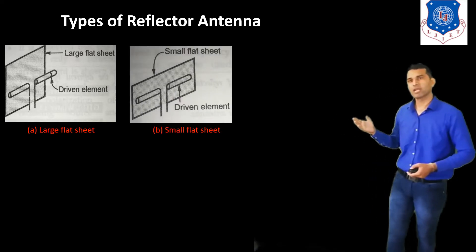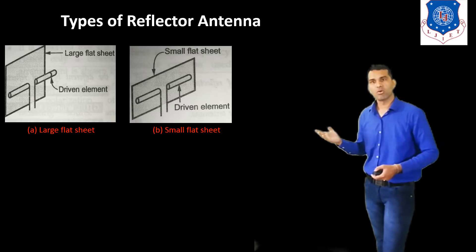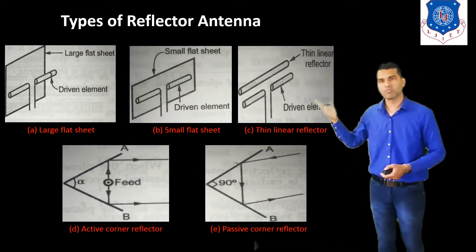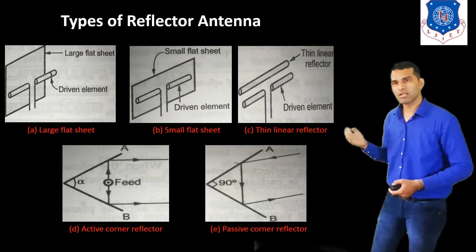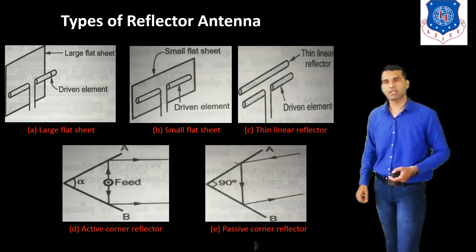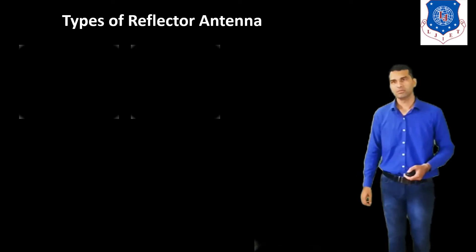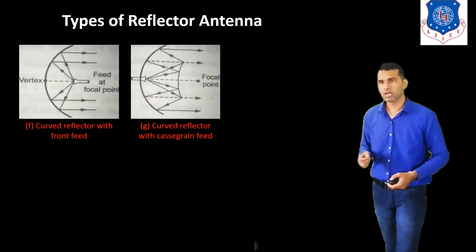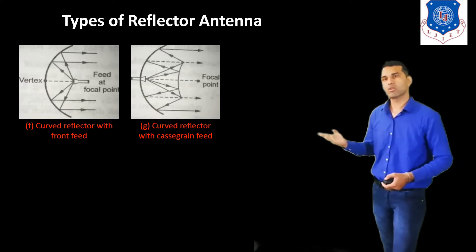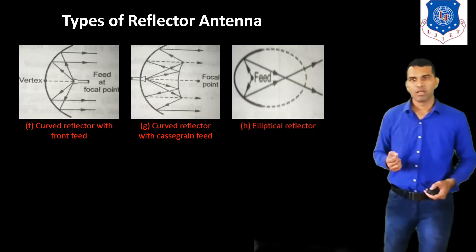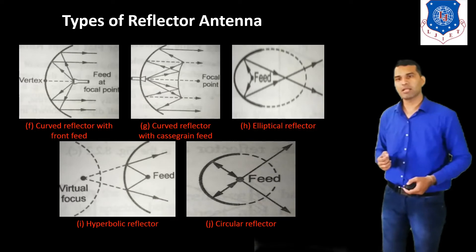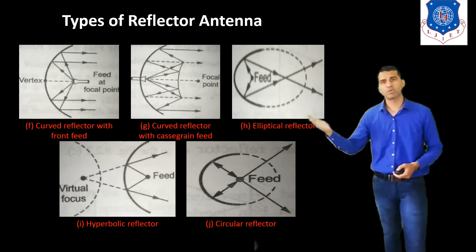Instead of the large disc, we can also use the small disc — this antenna is known as the small flat sheet reflector antenna. We can also use a simple thin wire element as a reflector — this is a thin linear reflector. Other types are the active corner reflector and the passive corner reflector antenna. Next types are the curved reflector with front feed and curved reflector with cascade feed. Then there is the electrical reflector antenna, the hyperboloid reflector, and circular reflector antenna.